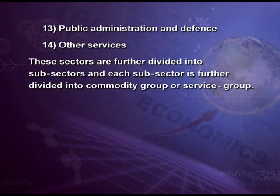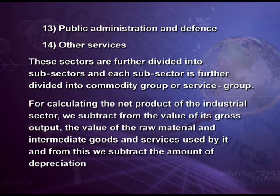These 14 sectors are further divided into sub-sectors, and each sub-sector is further divided into commodity groups or service groups. For calculating the net product of an industrial sector, we subtract from the value of its gross output the value of raw material and intermediate goods and services used by it, and from this we subtract the amount of depreciation. For the economy as a whole, we add net products contributed by each sector to get net domestic product.